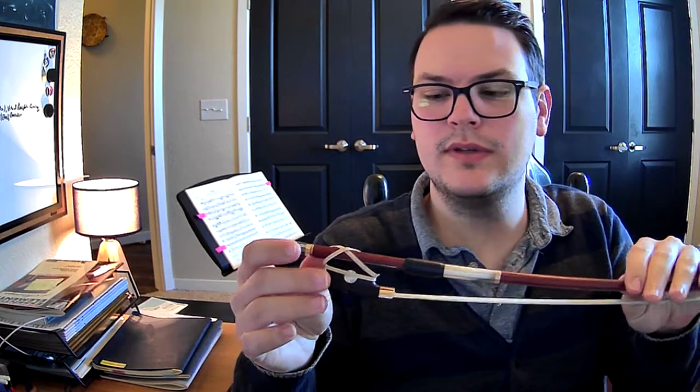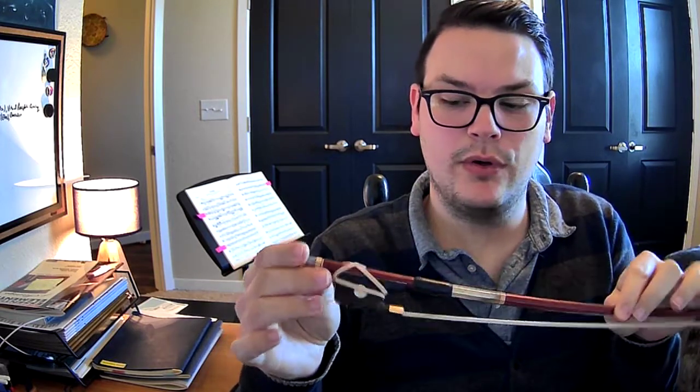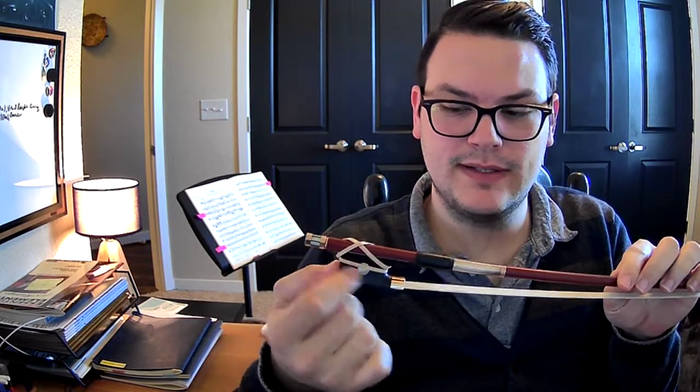Hello my cellos, let's go over our bow hold review. We've got two methods we're going to go over. First, the rubber band method because that's what we started with. Hold your right hand up, make sure your fingers are nice and loose.